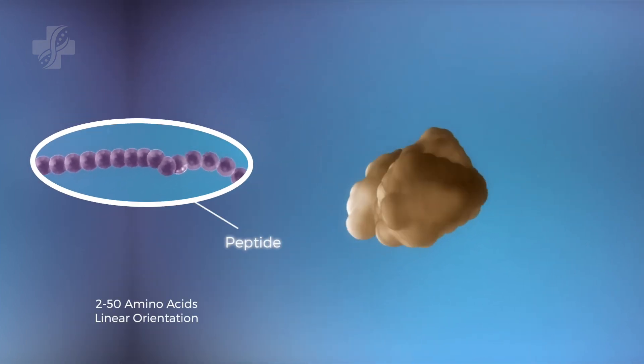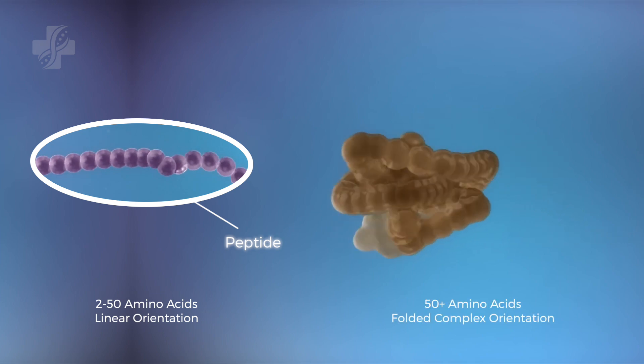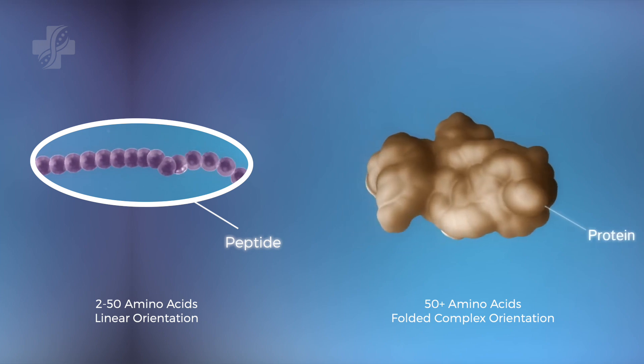Peptides are short chains of amino acids that remain linear. Peptide BPC-157, for example, has 15 amino acids in its peptide chain, while proteins contain much longer chains of amino acids and fold into complex 3D shapes.